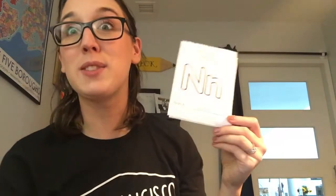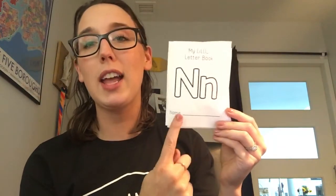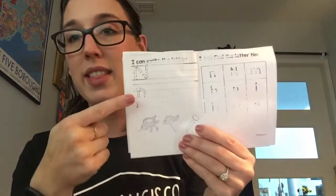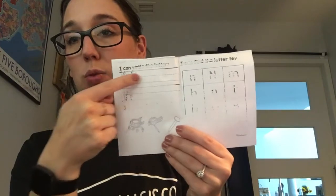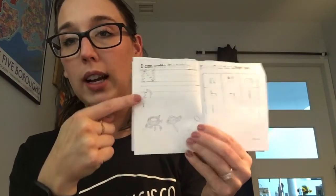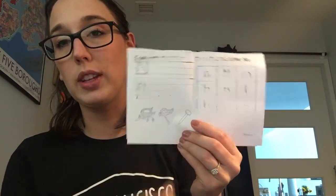Now that my book is folded I can get started working on it. On this page you're going to color the letter N and then write your name. On this page you're going to practice writing the N on both lines and then also you can color these pictures.